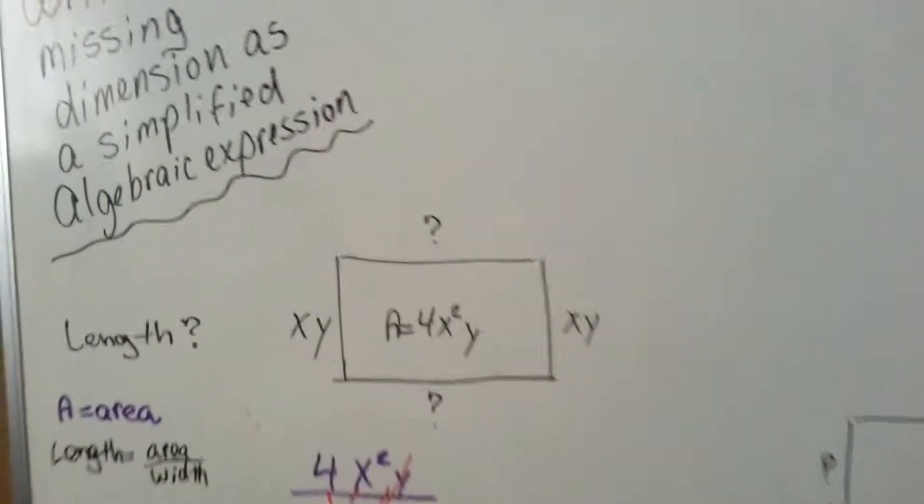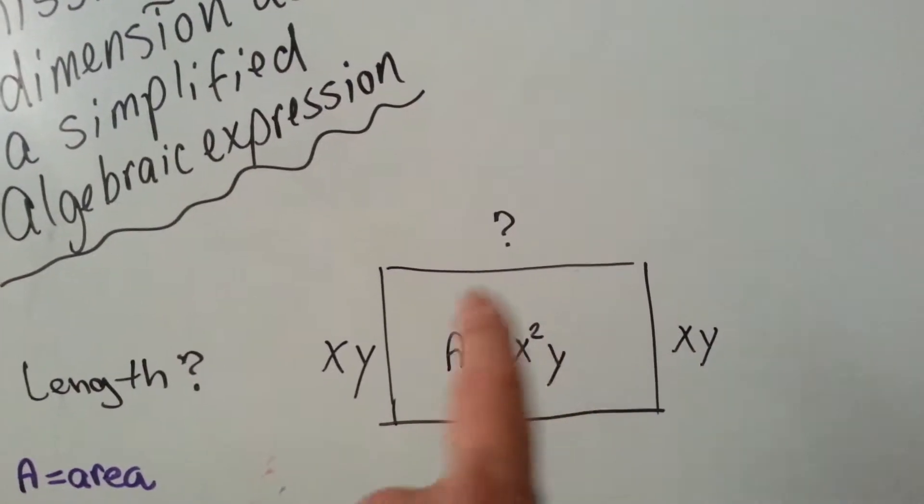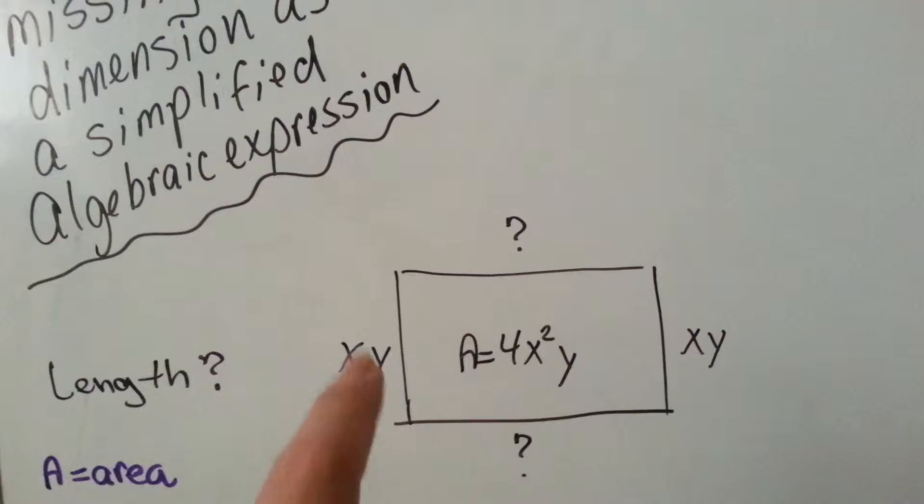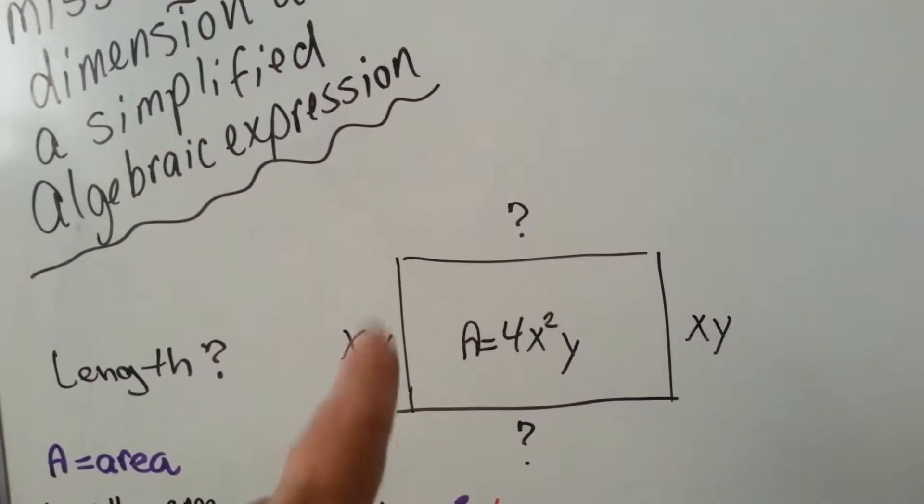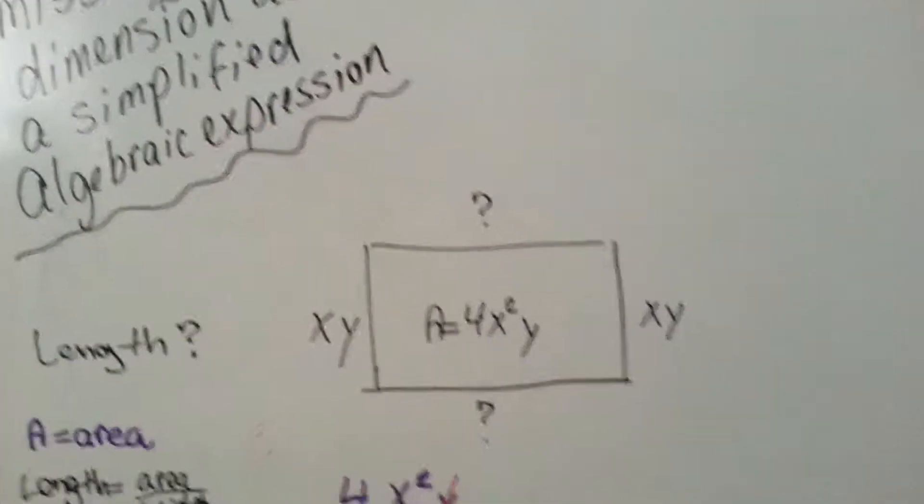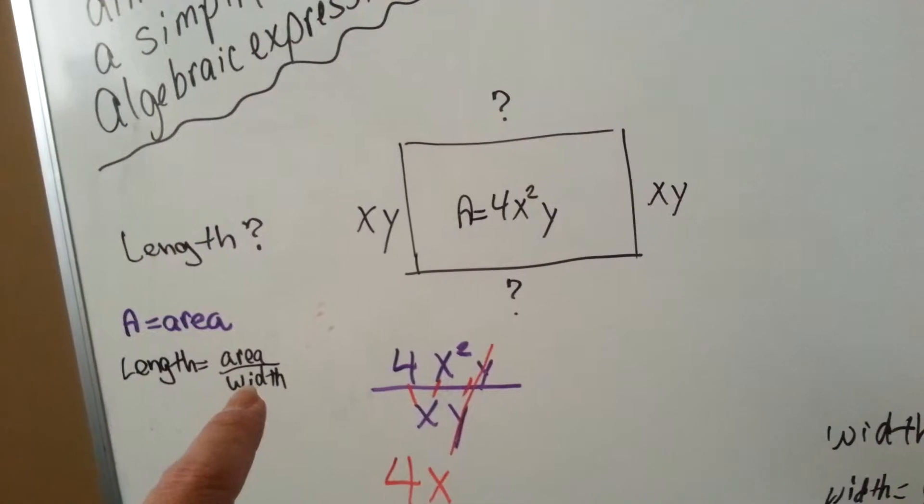Let's say you're given this and you need to find the length. You know the area, that's this entire area here inside, and you know this width right here, but you don't know the length. So what do you need to do? Well, the length is equal to the area divided by the width.